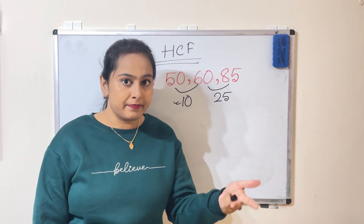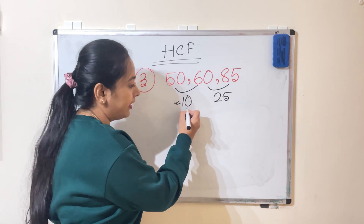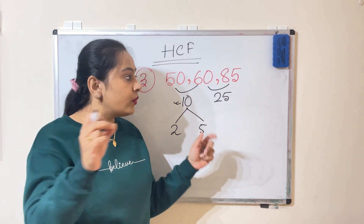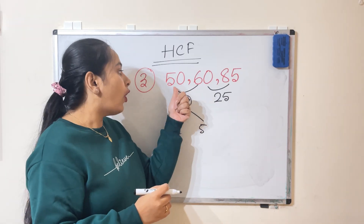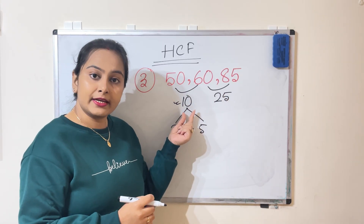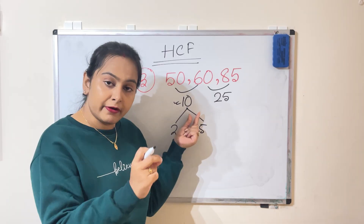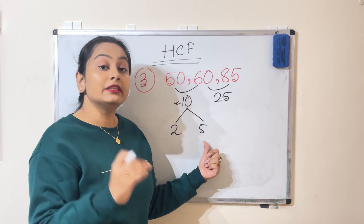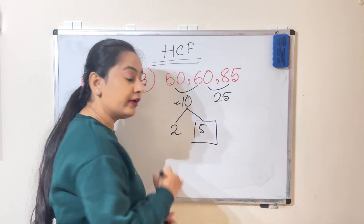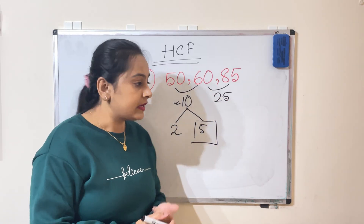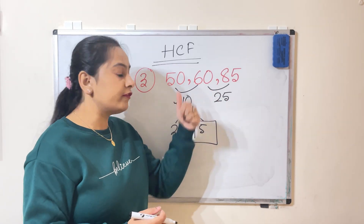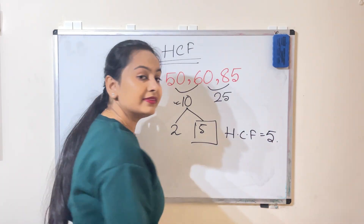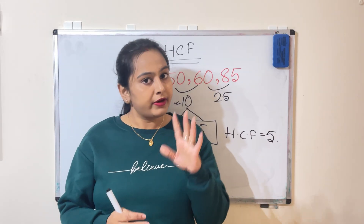Since 10 is not a factor of all numbers, we take another step: find the factors of 10. The factors of 10 are 2 and 5, and we always choose the greatest factor. So we check whether 5 is a factor of all three numbers. 5 is a factor of 50, a factor of 60, and also a factor of 85. So the HCF here is 5.